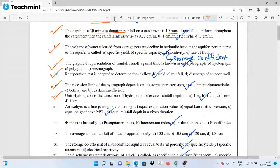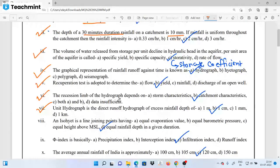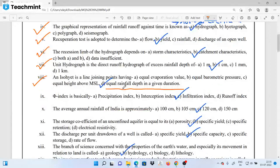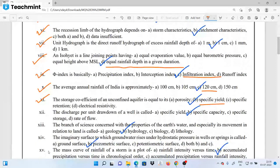Next questions: Unit hydrograph is the direct runoff hydrograph of excess rainfall depth of 1 cm. Isohyet is the line joining points of equal rainfall depth in a given duration. Phi Index is basically an infiltration index. Next, the average annual runoff of India is approximately 100 cm to 120 cm. The storage coefficient of an unconfined aquifer is equal to specific yield.